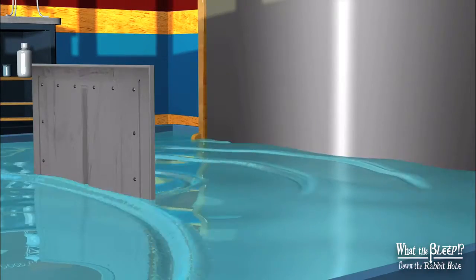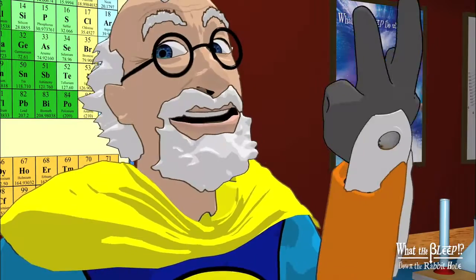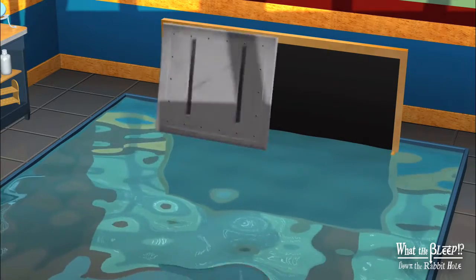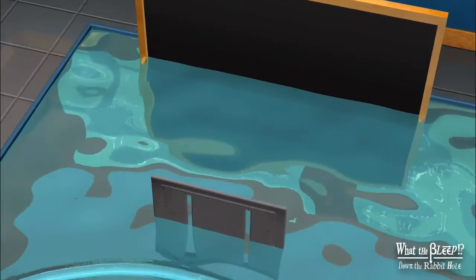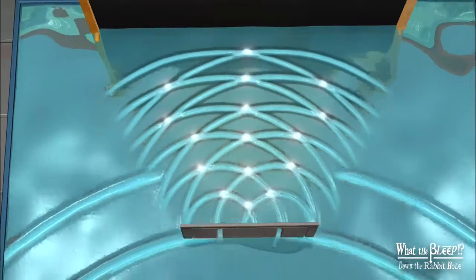But when we add the second slit, something different happens. If the top of one wave meets the bottom of another wave, they cancel each other out. So now there is an interference pattern on the back wall.